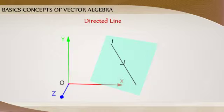If we restrict this line L to the line segment AB, then we obtain a directed line segment. The directed line segment has magnitude as well as direction. The quantity that has both magnitude and direction is called a vector, denoted as AB vector or simply A vector.